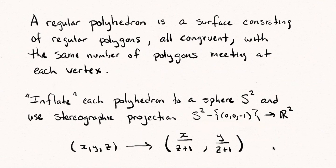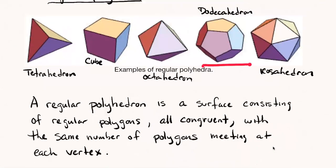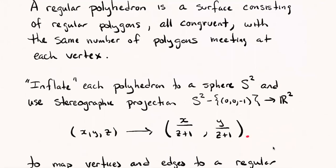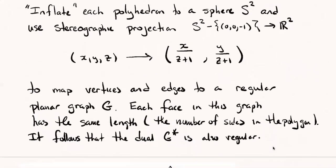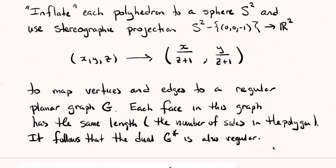If you think about taking one of these polyhedra, inflating it so that it gives its vertices and edges as curves on the sphere, and then you map those curves on the sphere to the plane with the stereographic projection map, then you'll end up getting a planar drawing, a planar graph in the plane for each one of those polyhedra. So every regular polyhedra corresponds to some planar graph that you can draw in R^2. You can realize that planar graph with this stereographic projection. And in this planar graph, every face has the same length because the polygons that we made the polyhedra with are all congruent.